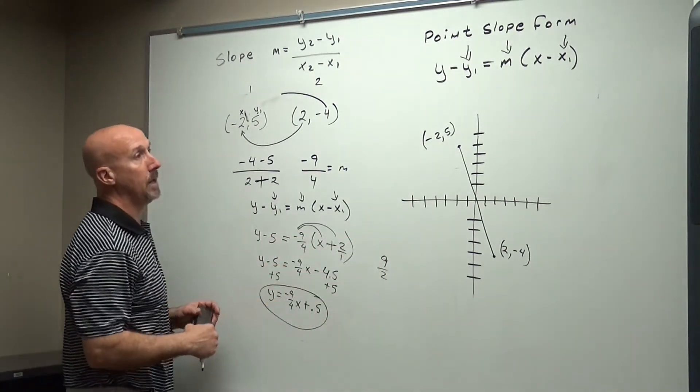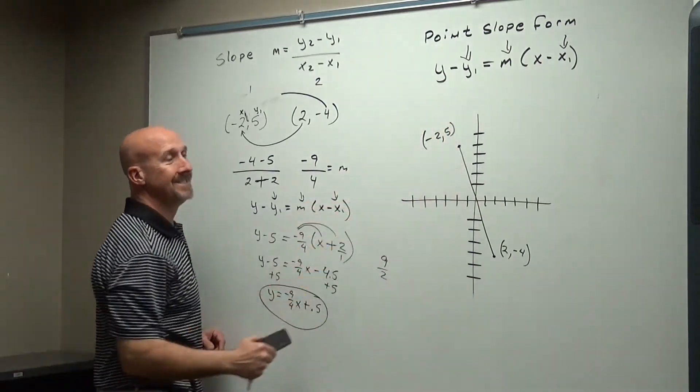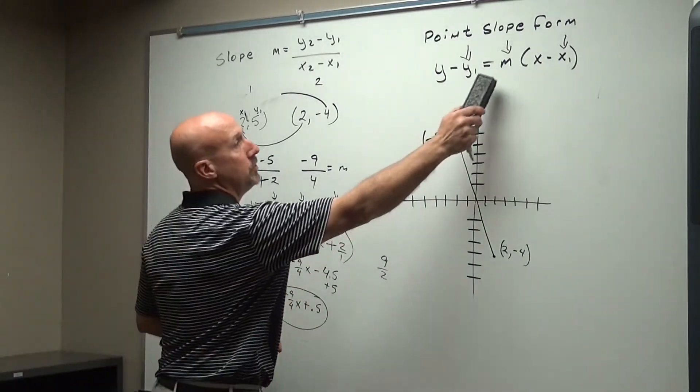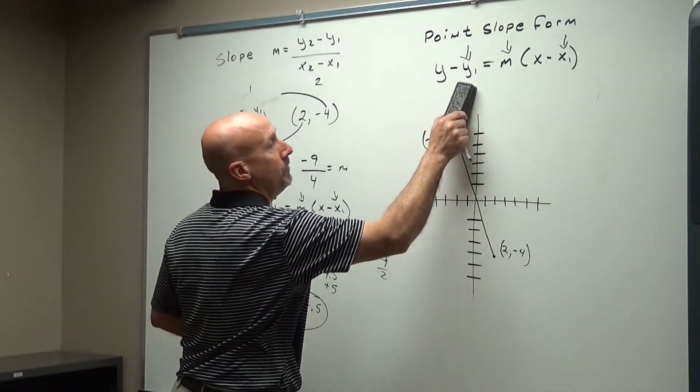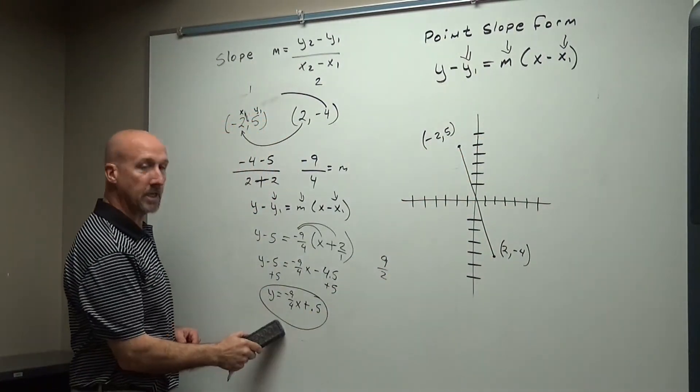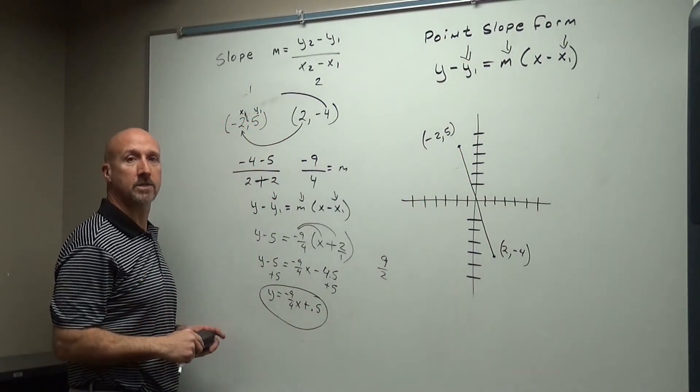So this is how we take two points and put it in point-slope form. Take the point-slope form, do the distributive property, and move the y1 over, and you get slope-intercept form. Hopefully this helps.